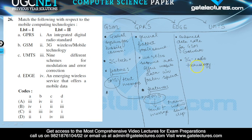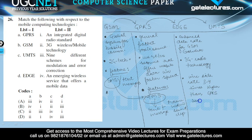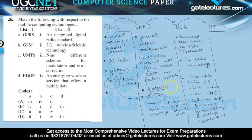EDGE increases the data rate 3 or 4 times higher than GPRS with the help of new modulation and coding schemes. Different coding schemes and different error correction methods are also used in this technology.